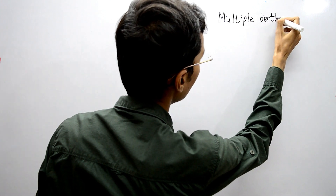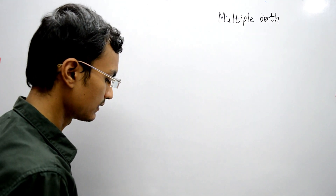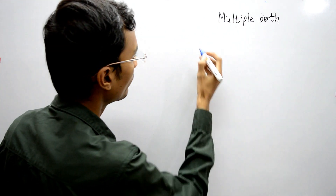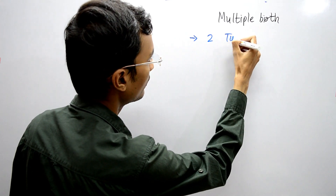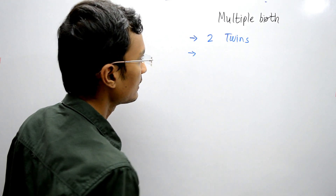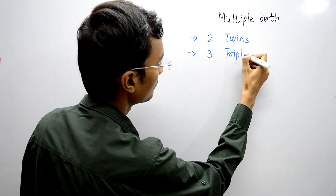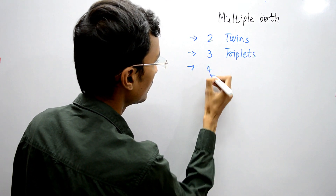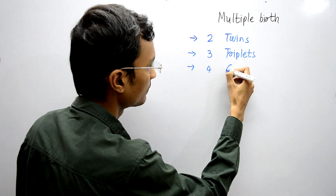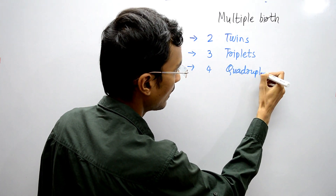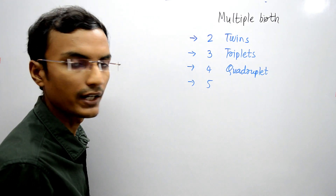Multiple birth means giving birth to more than one child at a time. It includes giving birth to two individuals at a time, which is known as twins. If three individuals are born at a time it is known as triplets, four individuals is known as quadruplets, and five individuals is known as quintuplets.